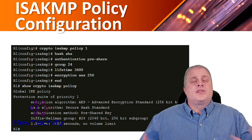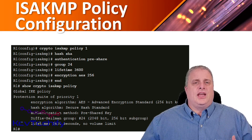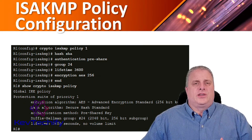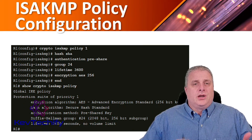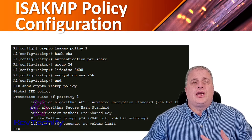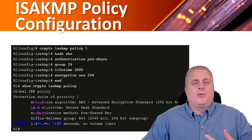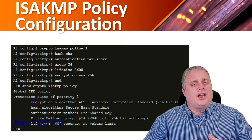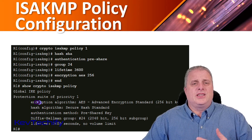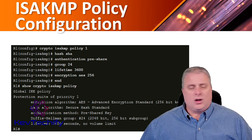To meet the security policy requirements of our company, we have to configure ISAKMP with the following security associations: the hash is SHA, the authentication is pre-shared key, we're going to use Diffie-Hellman group 14, we're setting up a lifetime of 3,600 seconds, and finally our encryption is AES.